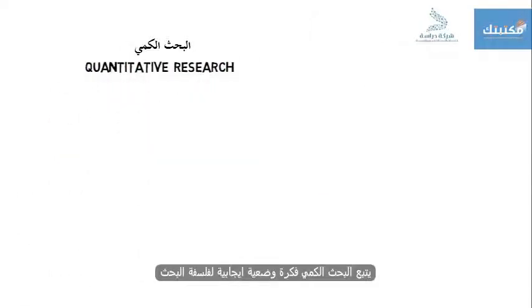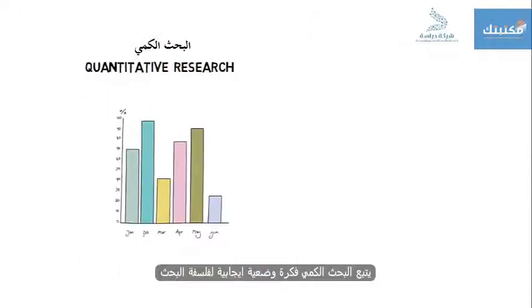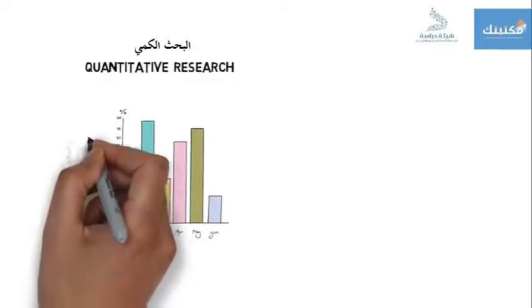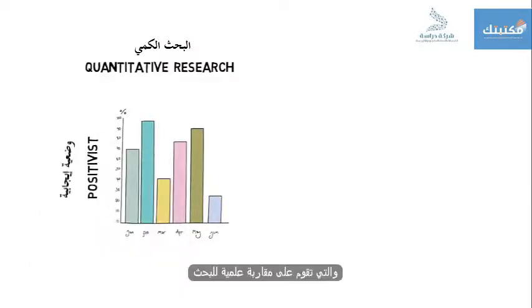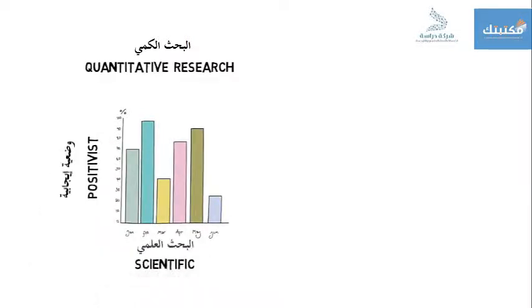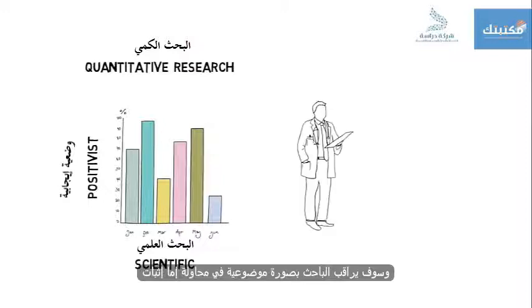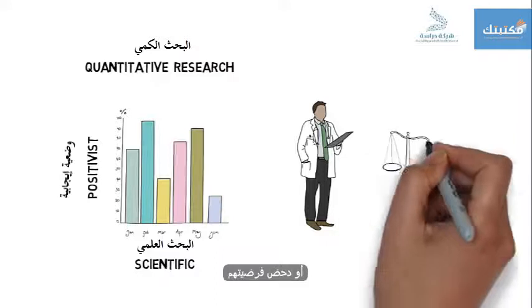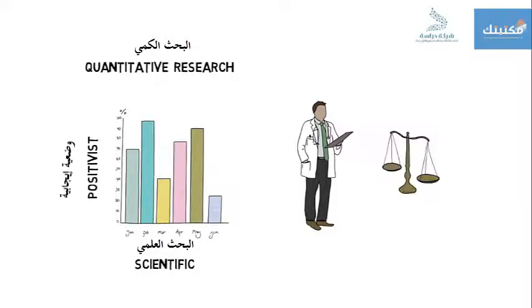Quantitative research follows a positivist research philosophy, which is based on a scientific approach to research. The researcher would observe objectively in an attempt to either prove or disprove their hypothesis. This is made possible through the collection of data that can be measured.